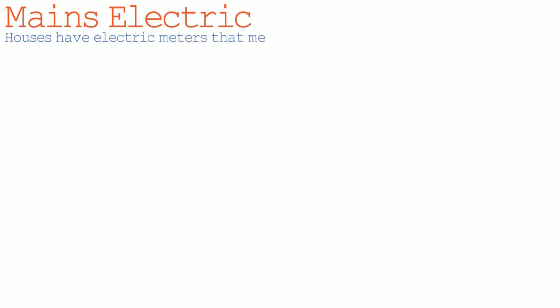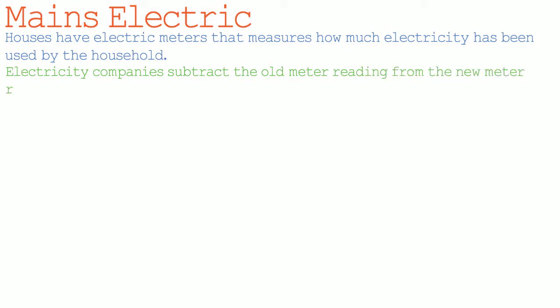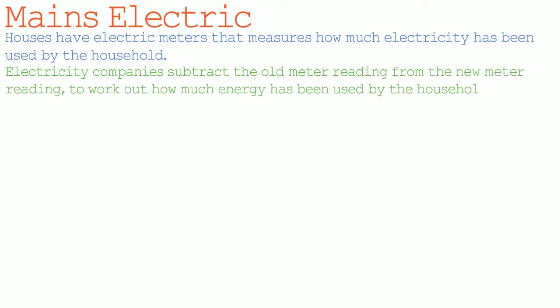Houses have electric meters that measure how much electricity has been used by the household. Electricity companies subtract the old meter reading from the new meter reading to work out how much energy has been used.